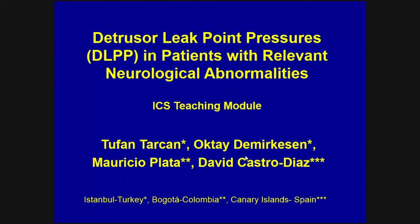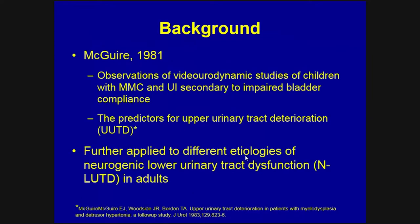The title of our teaching module is Detrusor Leak Point Pressures in Patients with Relevant Neurological Abnormalities. The basis of our information regarding Detrusor Leak Point Pressure originates from McGuire's studies from 1981. These were retrospective observations with urodynamic studies of children with myelomeningocele and urinary incontinence secondary to impaired bladder compliance. This concept was further applied to different etiologies of neurogenic lower urinary tract dysfunction, also in adult patients.